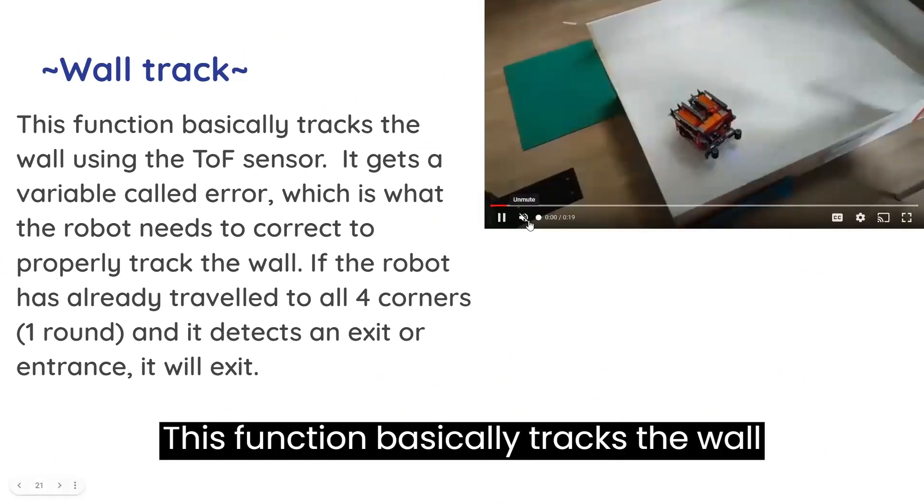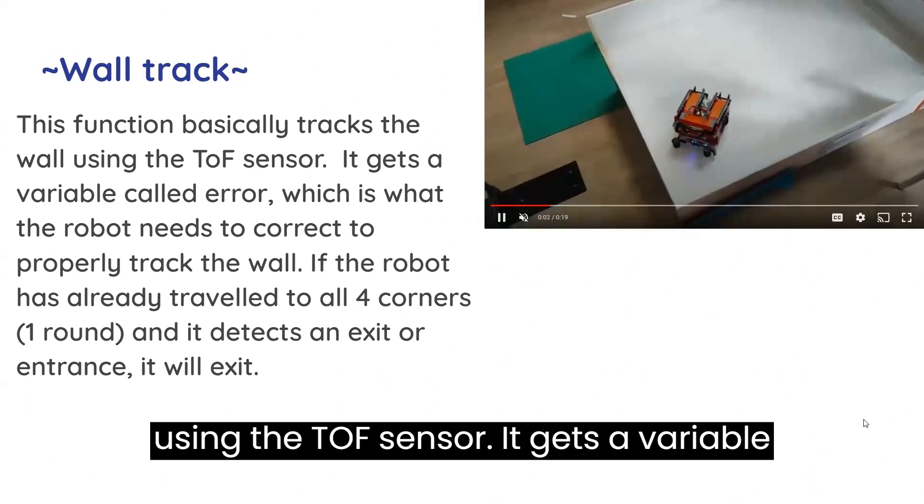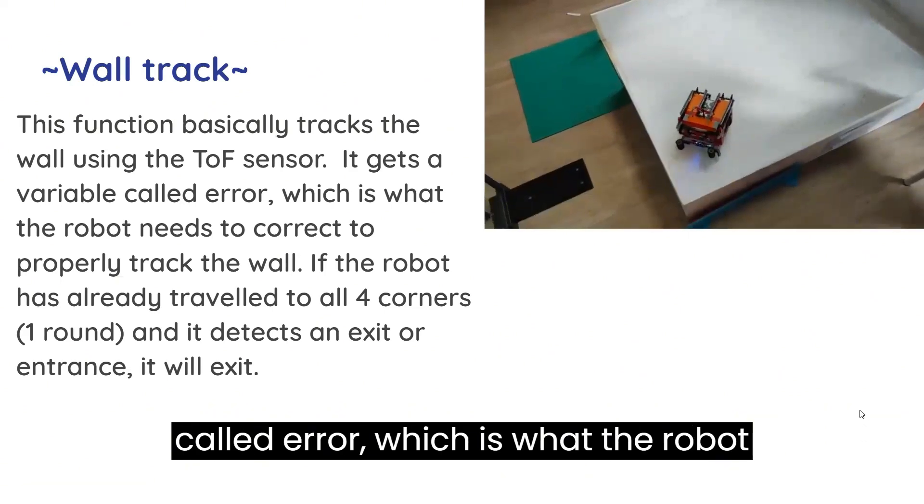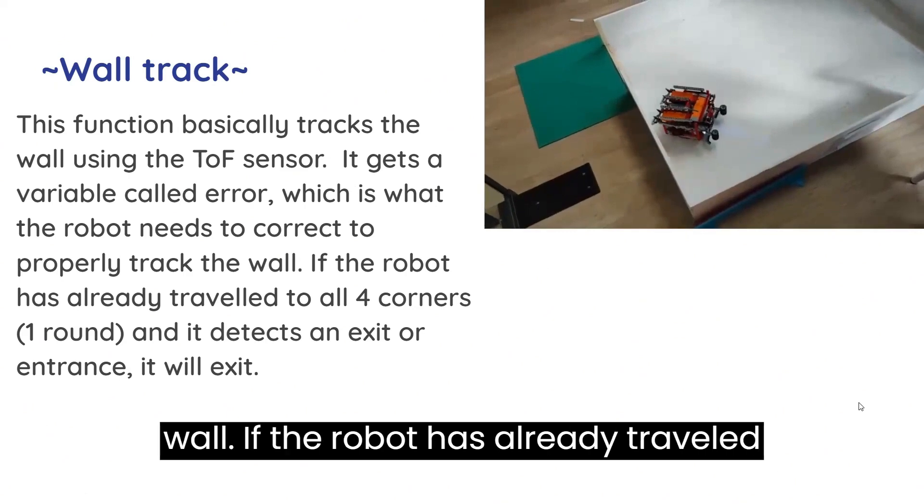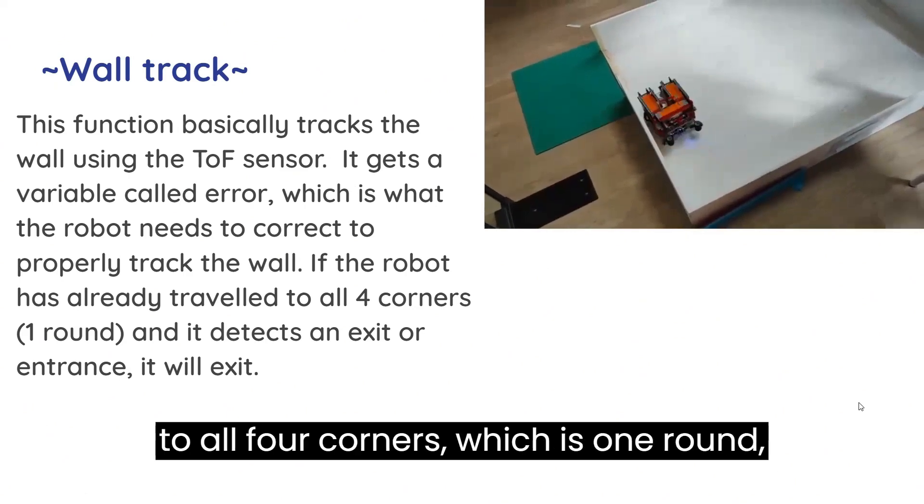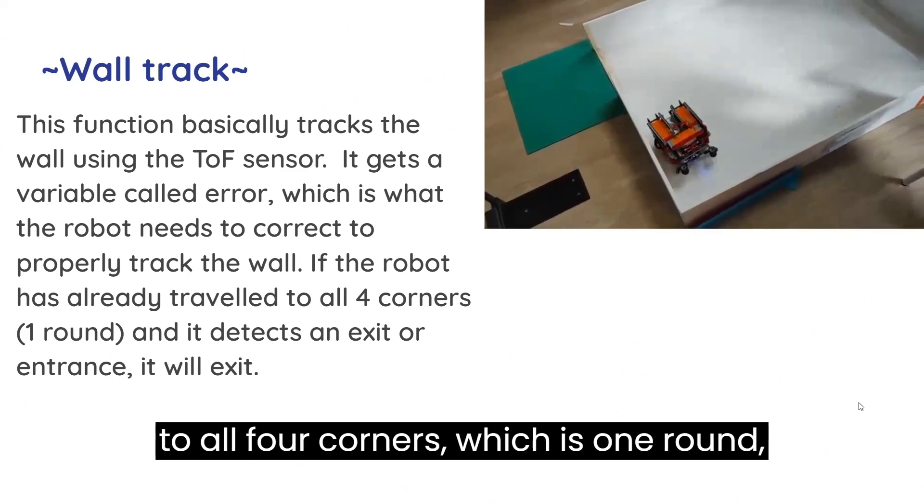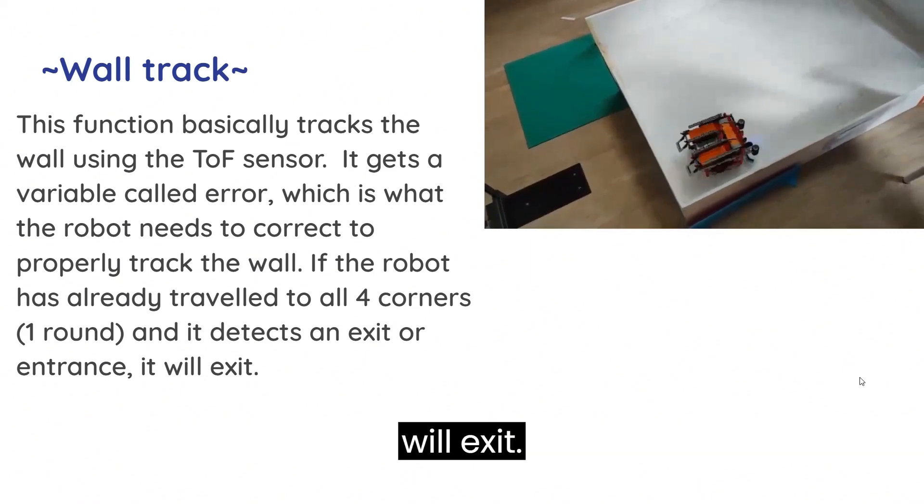This function basically tracks the wall using the ToF sensor. It gets a variable called error, which is what the robot needs to correct to properly track the wall. If the robot has already traveled to all four corners, which is one round, and it detects an exit or entrance, it will exit.